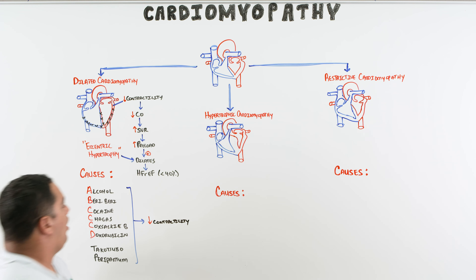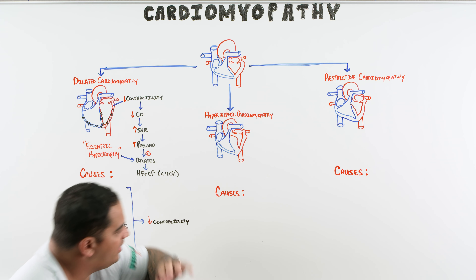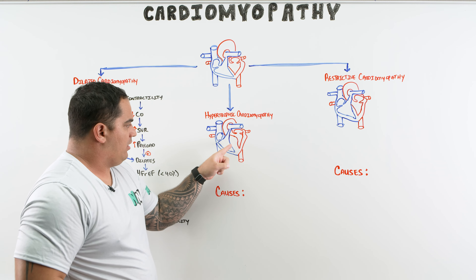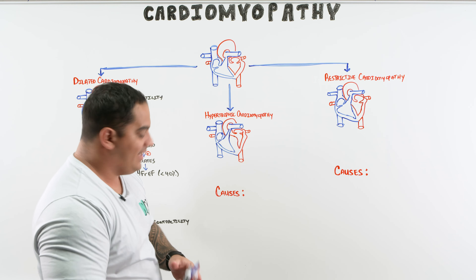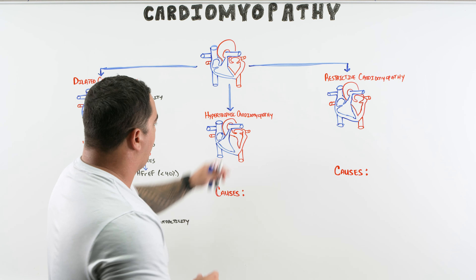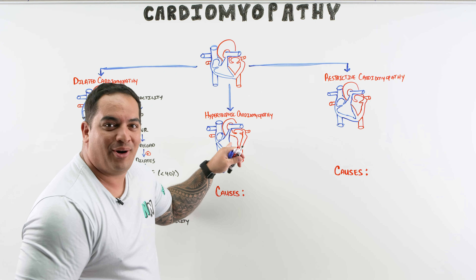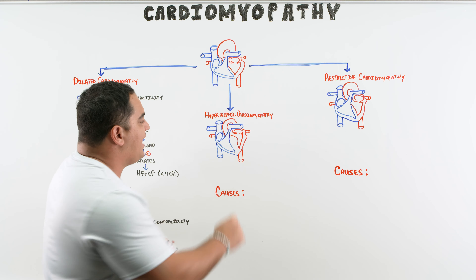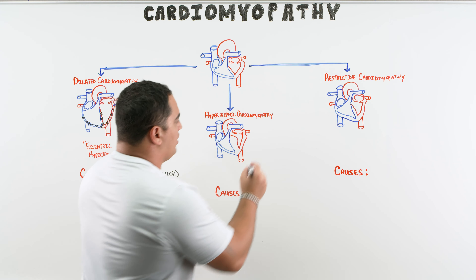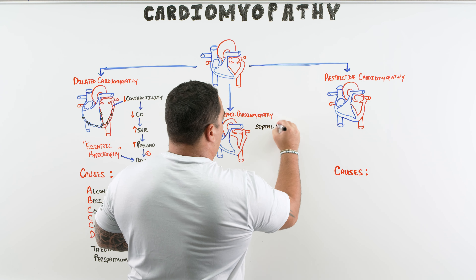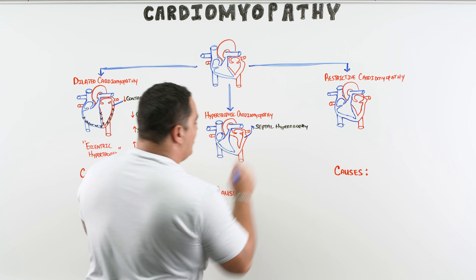That covers dilated cardiomyopathy. Now let's move to hypertrophic cardiomyopathy. The primary process is, as the name says, hypertrophy — but most of the time it's asymmetric and involves the septum, so we call this septal hypertrophy. Look at how thick and chunky that ventricular septum is.